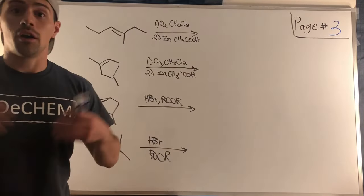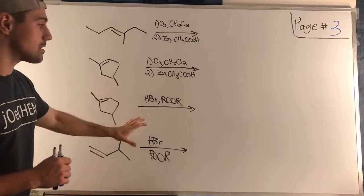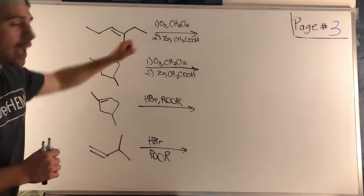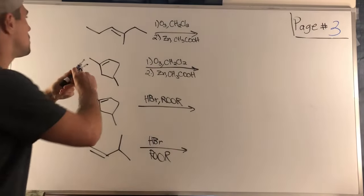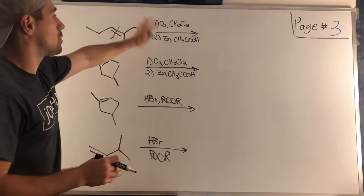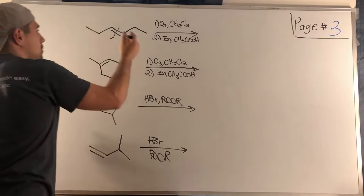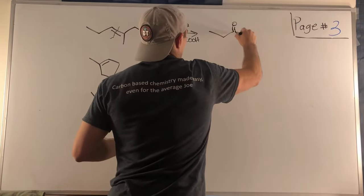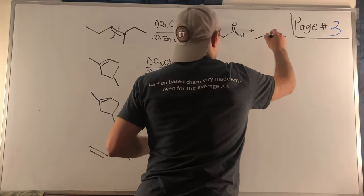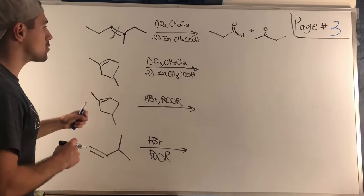On page three we have two ozonolysis problems and two anti-Markovnikov HBr additions. For the first ozonolysis, we cut this double bond with our molecular scissors. It's not symmetrical so we get two different products. Given the reagents we're forming aldehydes and ketones: one fragment gives an aldehyde on this carbon, and the other fragment gives a ketone on the second interior carbon.